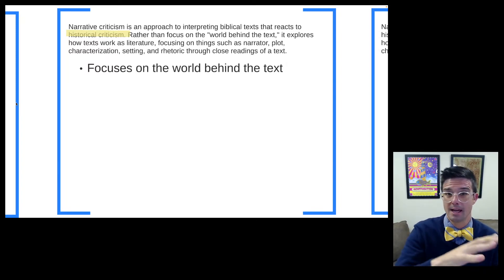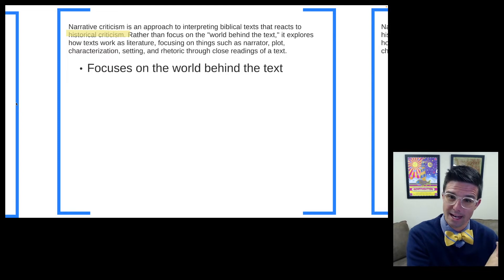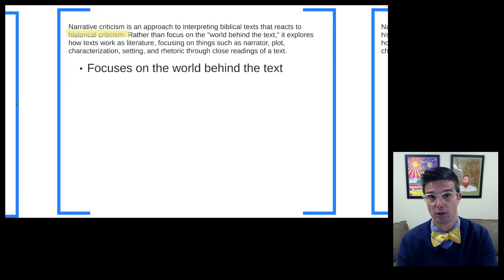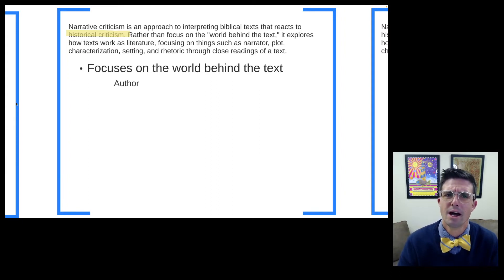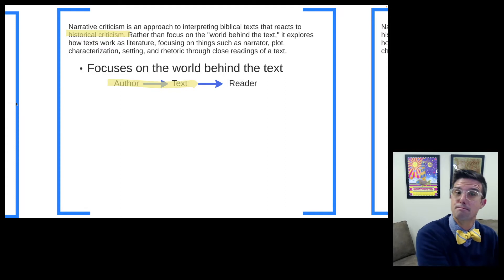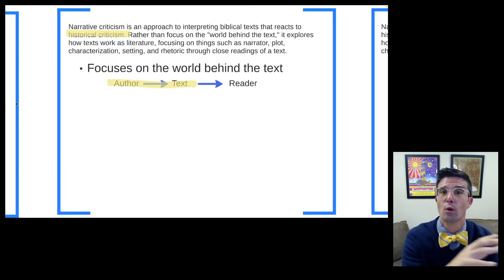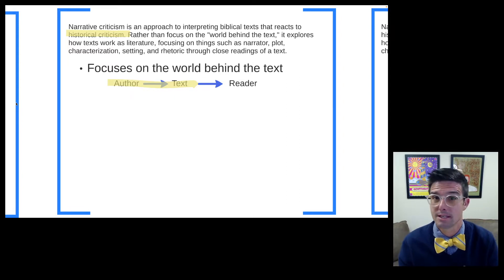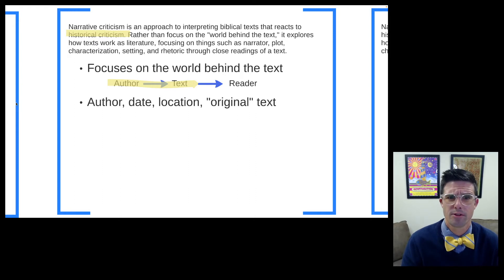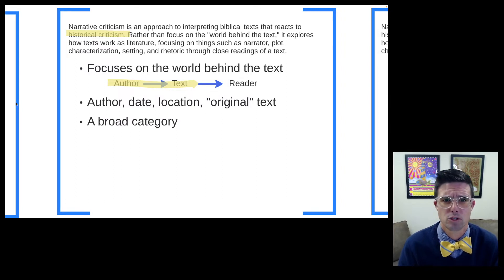When we engage the hermeneutical circle, we move between the different worlds. The world behind the text is most closely related to historical criticism, whereas narrative criticism is more closely related to the world of the text. When thinking about the world behind the text, we approach the text from the back end — thinking about the author, how they put things into the text, the original audience, and things like author, date, location, and the original text.